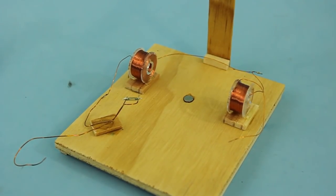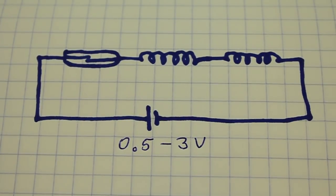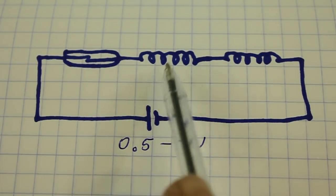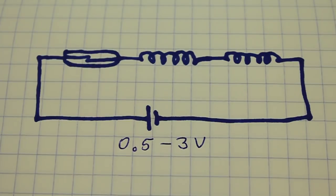Everything is connected in series, the two coils and the reed switch. And we apply voltage to the end of the reed switch and the end of one of the coils. This is the schematic, the reed switch and the two coils. And we can use a voltage between 0.5 and 3 volts.